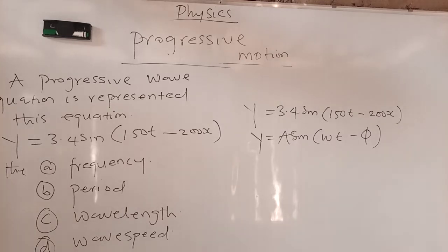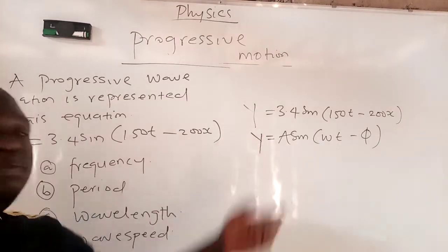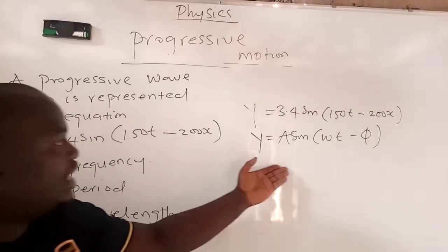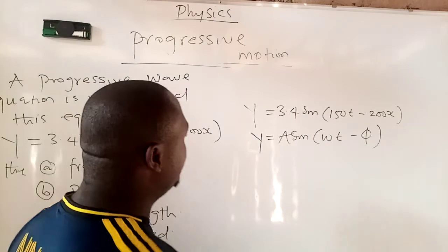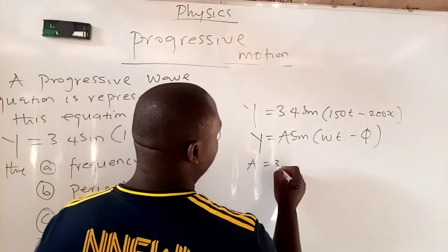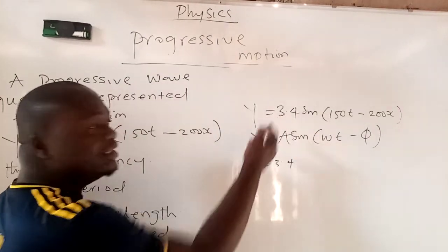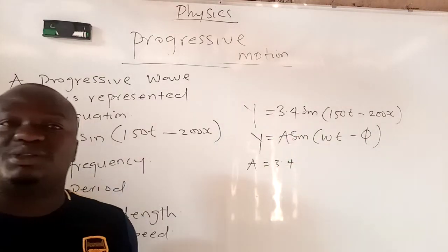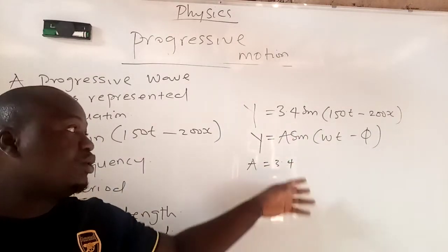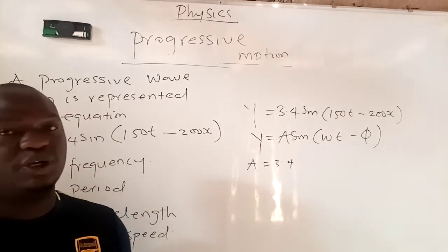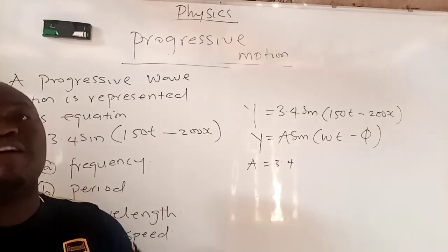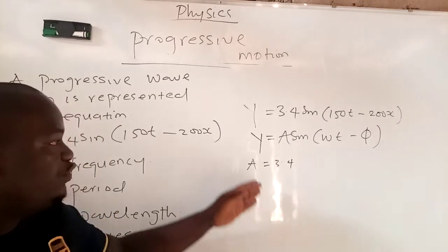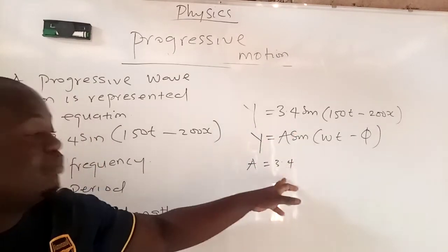Let me add my own question. From this question, what is the amplitude? By comparison, you can see that the amplitude here is 3.4. This equation looks like this equation. We will be solving a lot of problems under progressive wave. And if you do not understand how the equation relates, you will be having issues. From the equation, the amplitude already is 3.4.